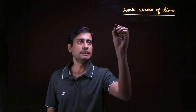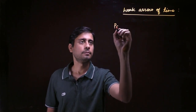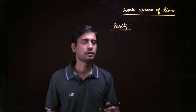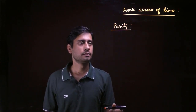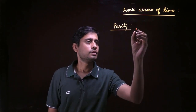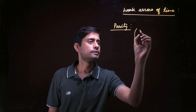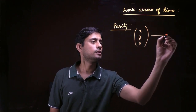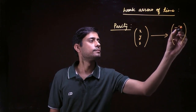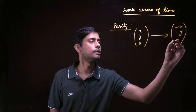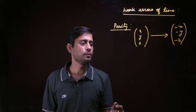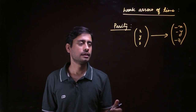Next we have P-symmetry, or parity. Parity is a transformation in which we transform the coordinates x, y, and z to their negative values: minus x, minus y, and minus z. You can think of it as placing a mirror in each direction.